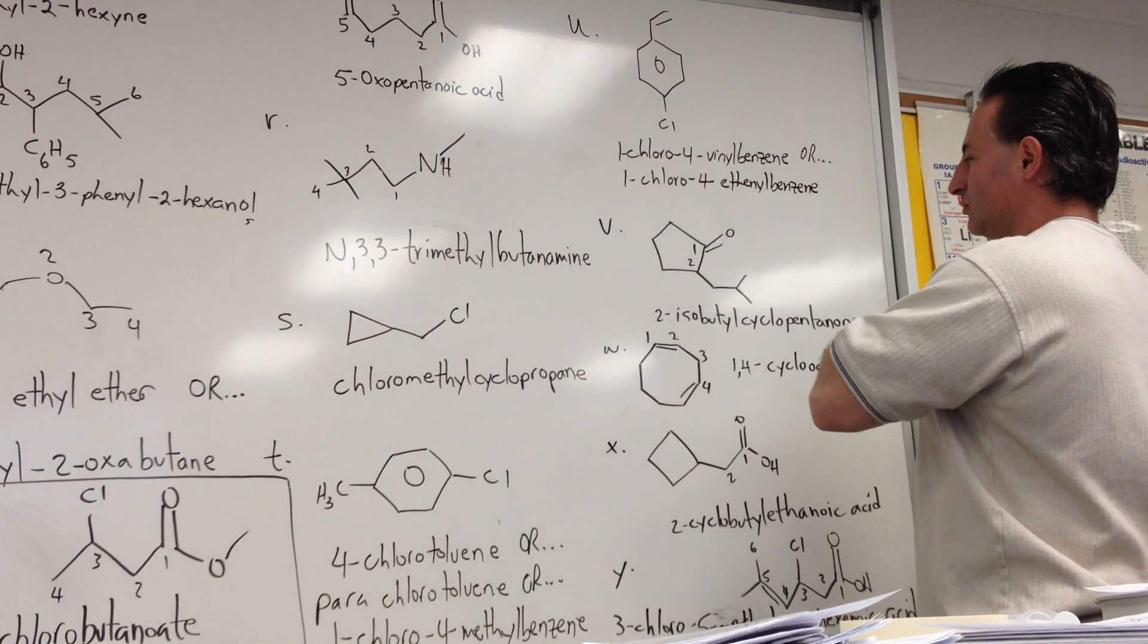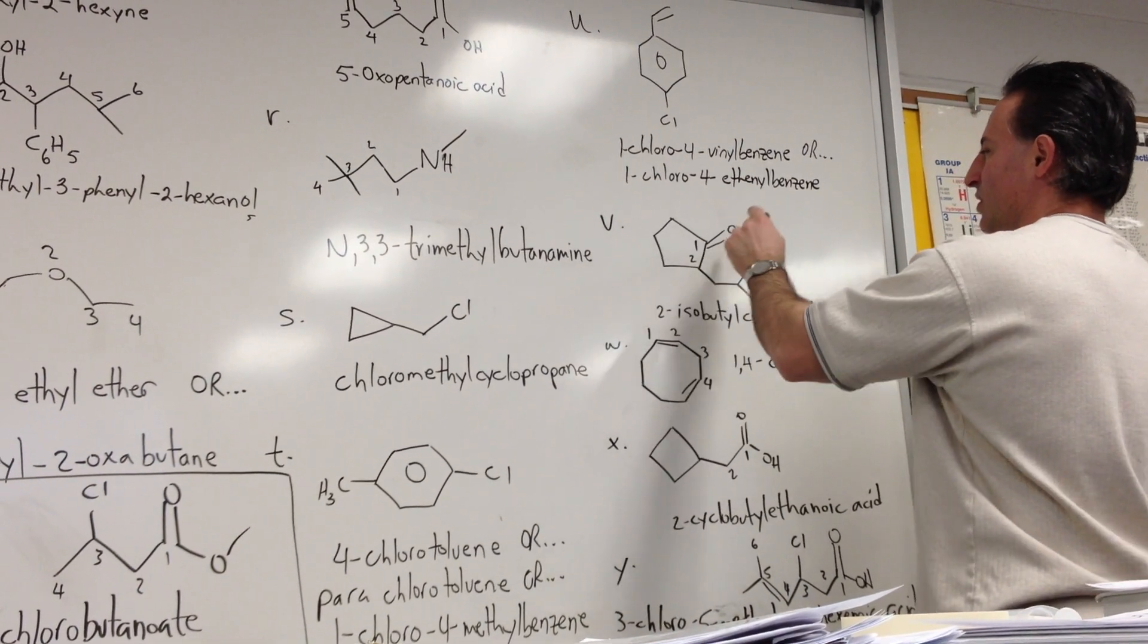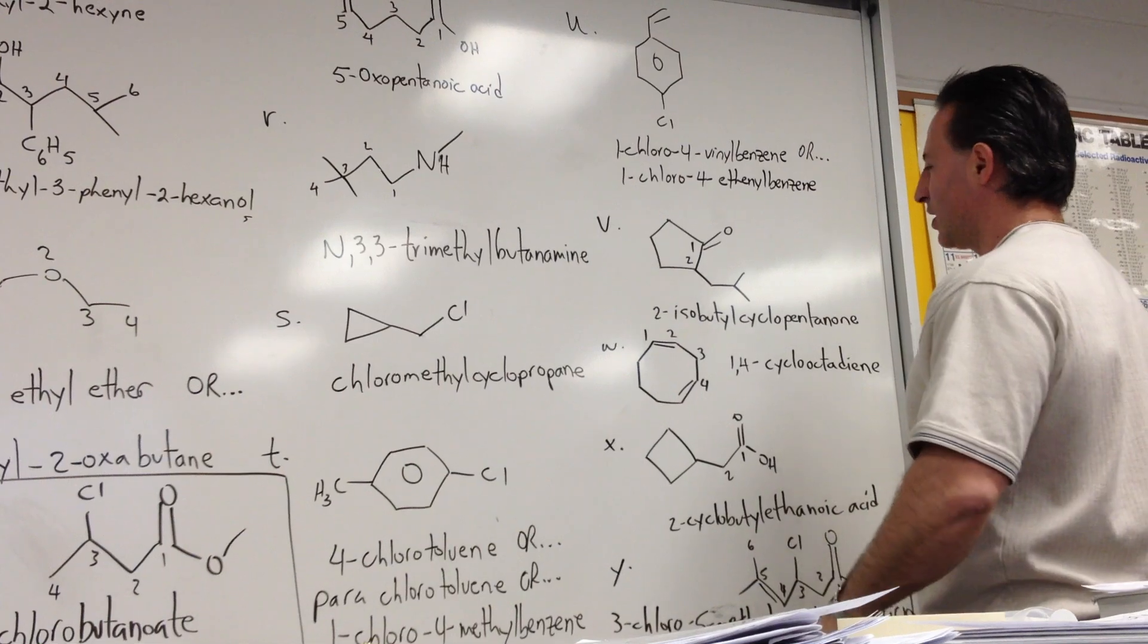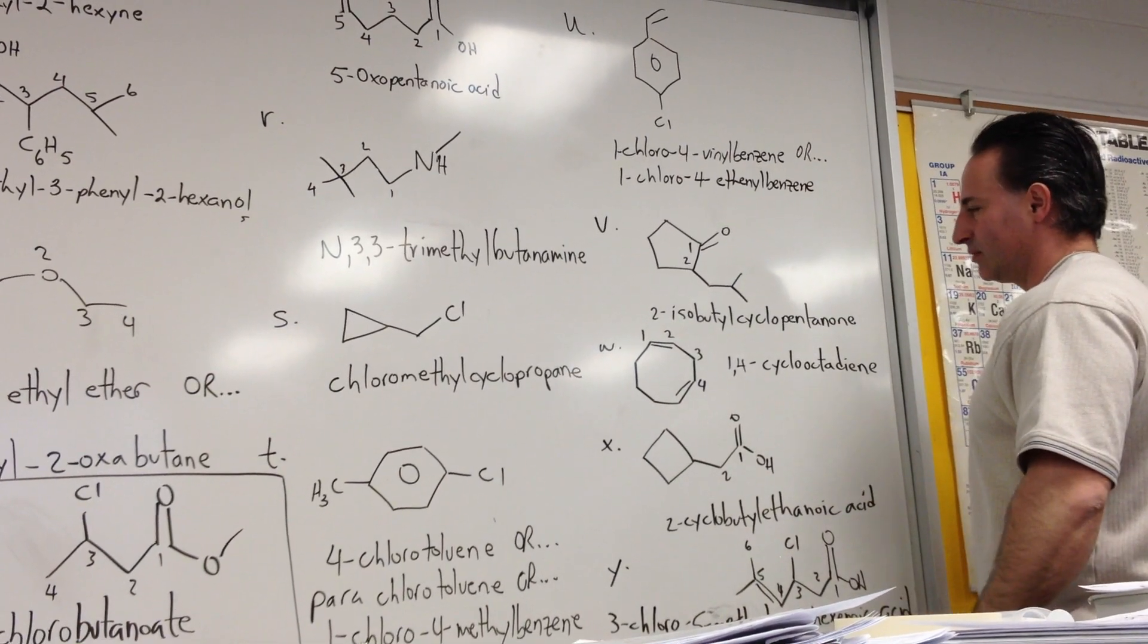For V, we have a cyclopentane with a ketone and an isobutyl group on it, so we call it 2-isobutyl cyclopentanone.